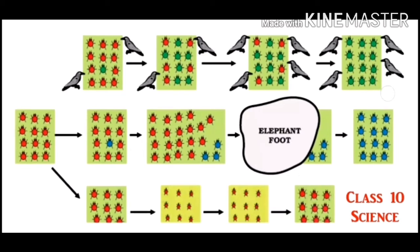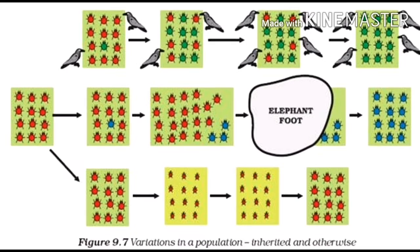Gradually, the number of green beetles increases in the beetle population. At one time, the entire beetle population has only green beetles. It means natural selection favored the evolution of green colored beetles.